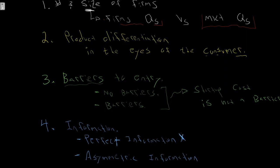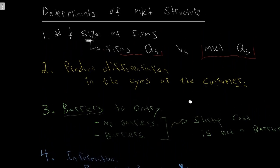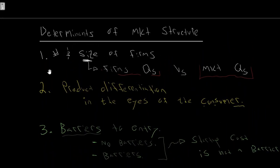For our course, we're always going to assume that we have perfect information, meaning it's only the first three determinants that will change as we look at different market structures. Those three are going to create our different market structures, while determinant four — information — always stays as perfect information.